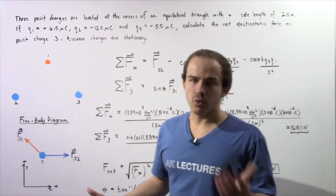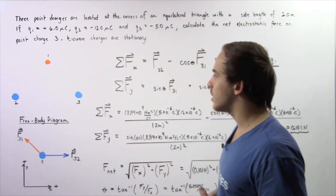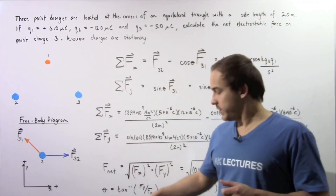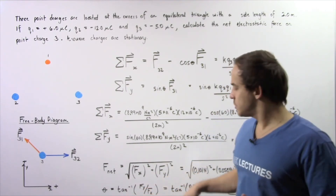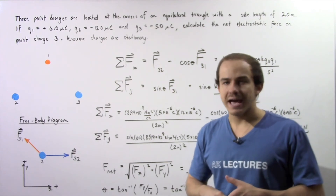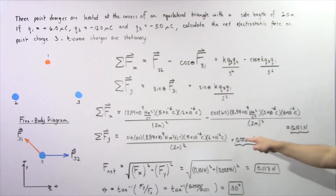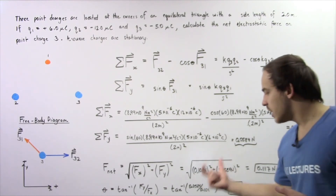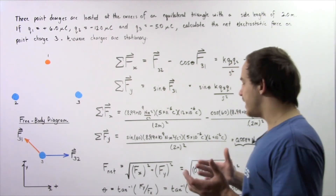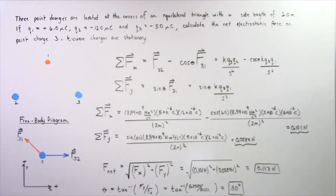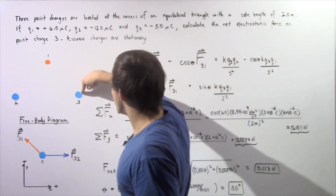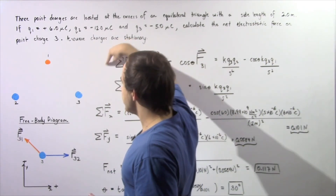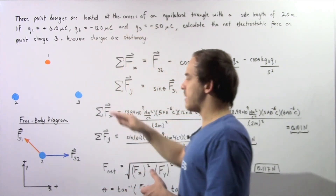Forces have both magnitude and direction, so what is our direction? To find the angle, we use the inverse tangent of the ratio Fy to Fx: inverse tangent of 0.0584 divided by 0.101, which gives an angle of approximately 30 degrees. So the net force points at an angle of 30 degrees with respect to the x-axis.